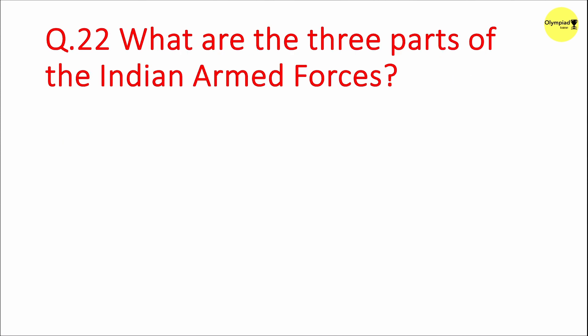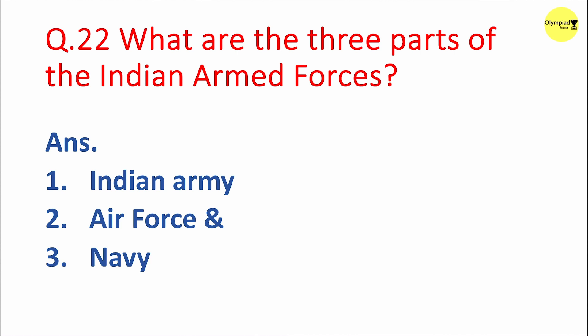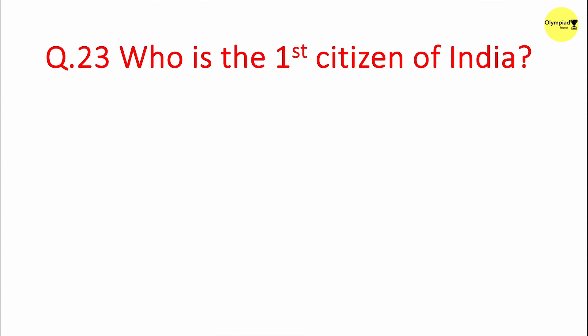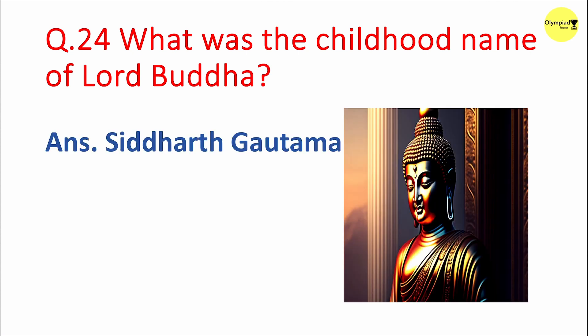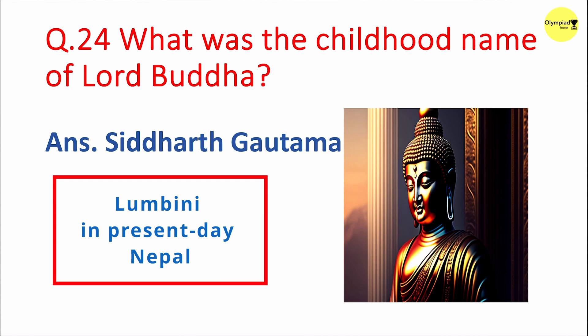Question 22: What are the three parts of the Indian Armed Forces? Answer: Indian Army, Air Force and Navy. Question 23: Who is the first citizen of India? Answer: The President. Question 24: What was the childhood name of Lord Buddha? Answer: Siddharth Gautam. Prince Siddharth Gautam was born in the town of Lumbini in present-day Nepal.